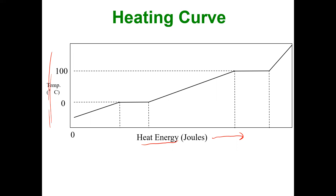This particular heating curve is for water. How do I know that? There are two temperatures given to me. Heating curves are assumed at one atmosphere of pressure, because that is standard pressure. What substance has a melting point of zero degrees Celsius and a boiling point of 100 degrees Celsius? Water.